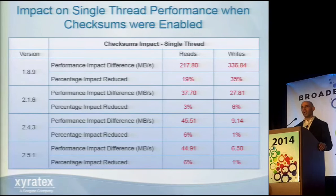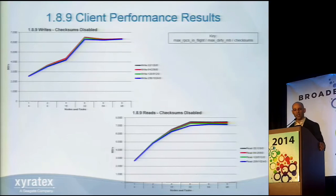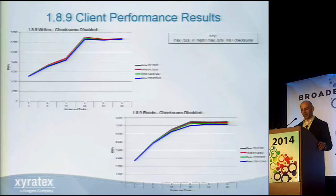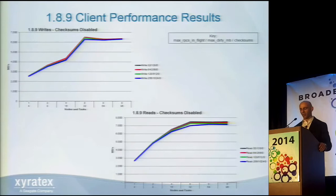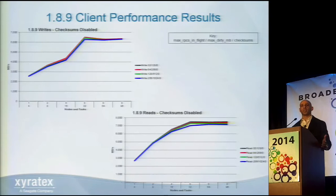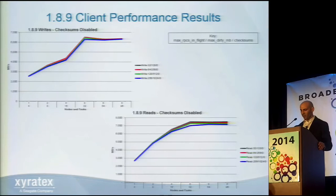Starting with 1.8.9: we started with max RPCs in flight at 32 and 128 max dirty MBs, incremented by 4x, scaling from one node with four tasks up to eight nodes with 96 threads total. With 1.8.9, as we added more threads, all the max RPCs in flight and max dirty MB settings had no impact — performance was consistent. We were able to hit the storage throughput of ~6 gigabytes per second using 1.8.9, and the different settings had really no impact on reads or writes.